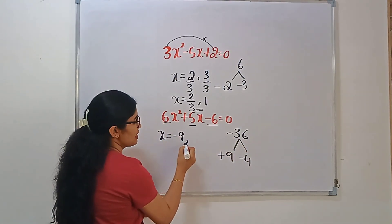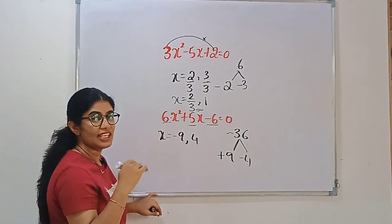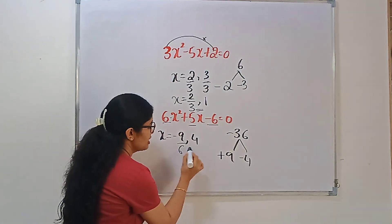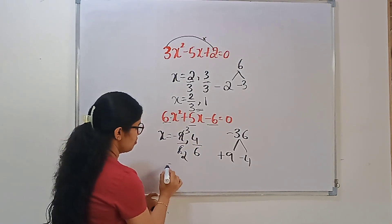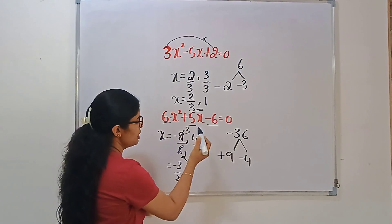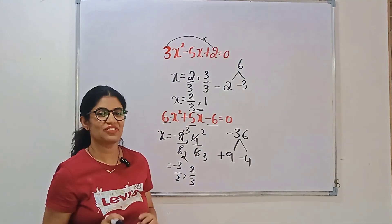And after that, reverse the sign. Minus 9 plus 4. Then if you have the coefficient is 6, in that case, we need to divide the coefficient. Divide this. Then 3, 3s are... minus 3/2. Then 2, 2s are... 2/3. So these are the roots of the equation.